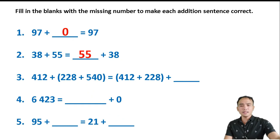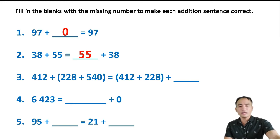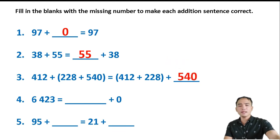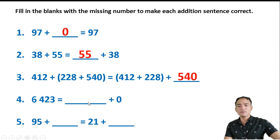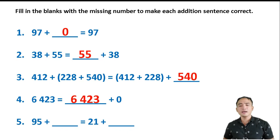Number 3: 412 plus (228 plus 540) equals (412 plus 228) plus blank. This is about the Associative Property of Addition, so the answer is 540. Number 4: What number added to itself gives 6423? The answer is the number itself — 6423 — which is the Identity Property.